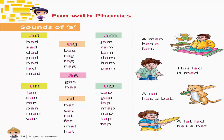A-N: An, Fan, Can, Ran, Pan, Man, Van. A-T: Bat, Cat, Rat, Fat, Mat, Hat. A-P: Cap, Gap, Lap, Map, Nap, Sap, Tap. Sentences: A man has a fan. This lad is mad. A cat has a bat. A fat lad has a bat.